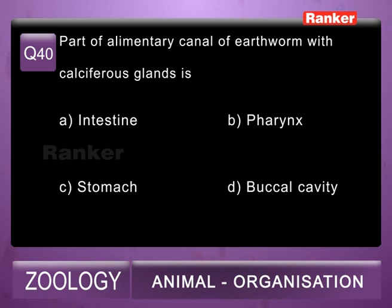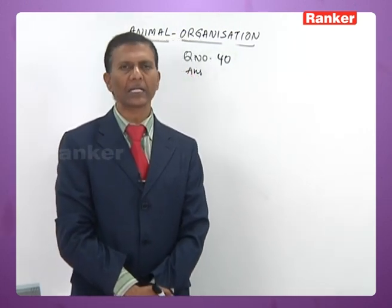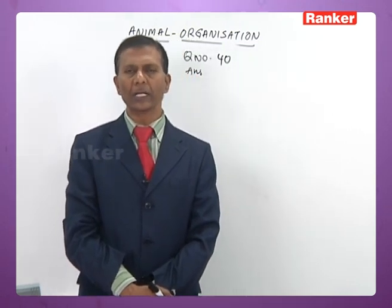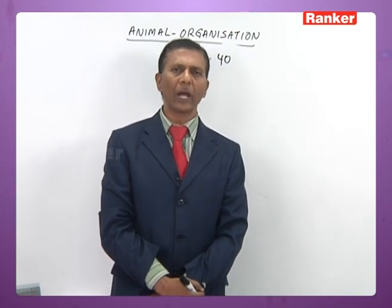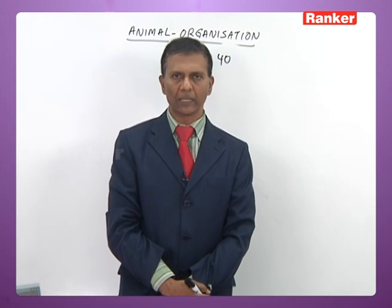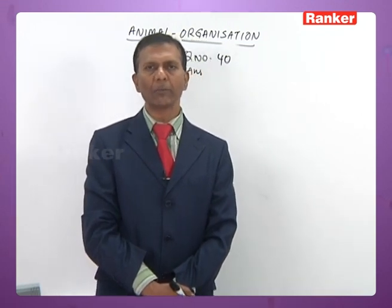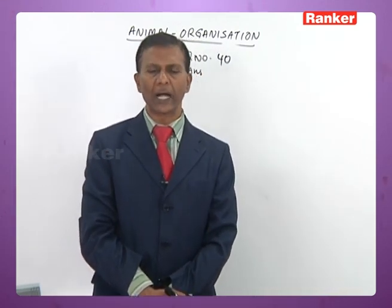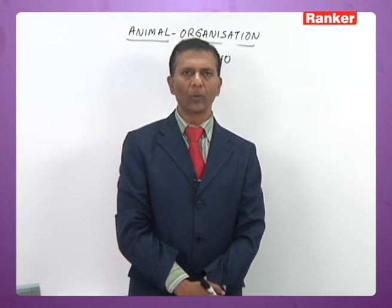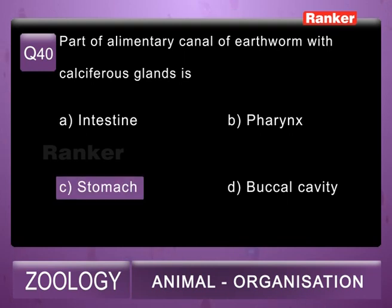Question 40: the part of the alimentary canal of earthworm with calciferous glands is A) intestine, B) pharynx, C) stomach, D) buccal cavity. In Pheretima the alimentary canal consists of mouth, pharynx, esophagus, gizzard, stomach, and intestine. In the stomach, apart from proteolytic glands, calciferous glands are also present. These calciferous glands secrete calcium ions to neutralize the acidity of humic acid, since earthworms feed on detritus matter deposited with humic acid. The 40th question correct answer is C, stomach.